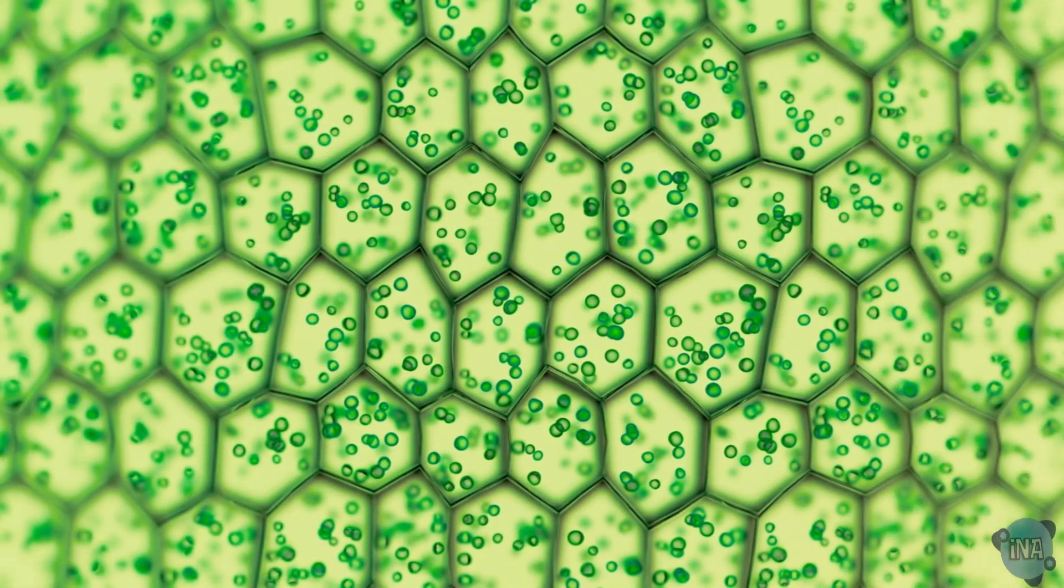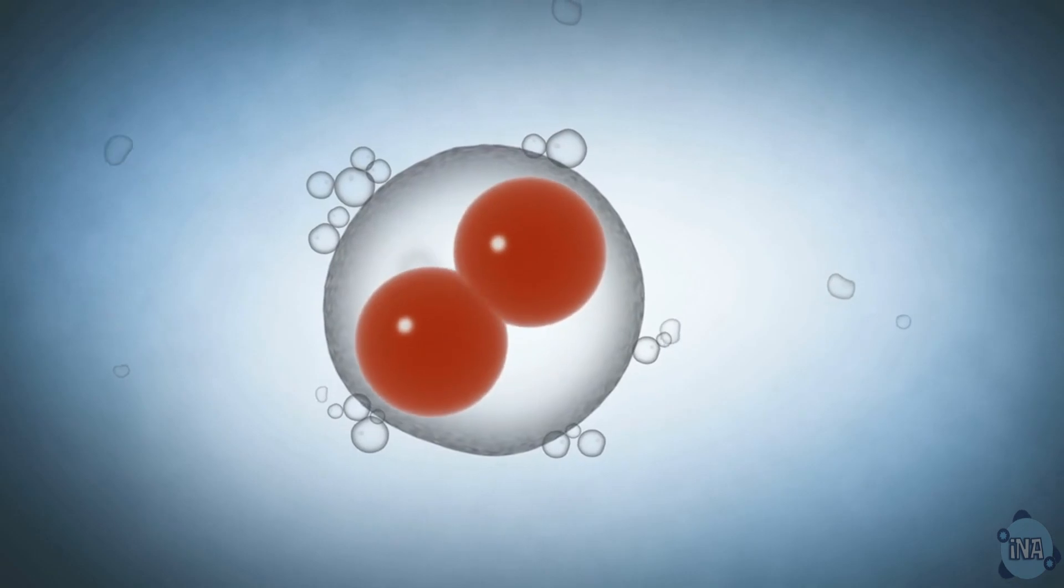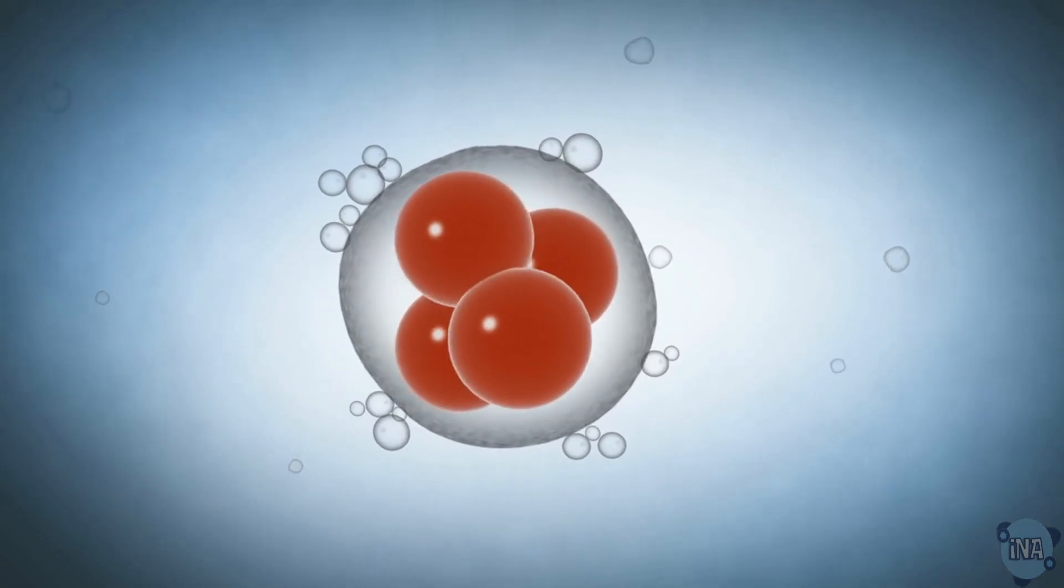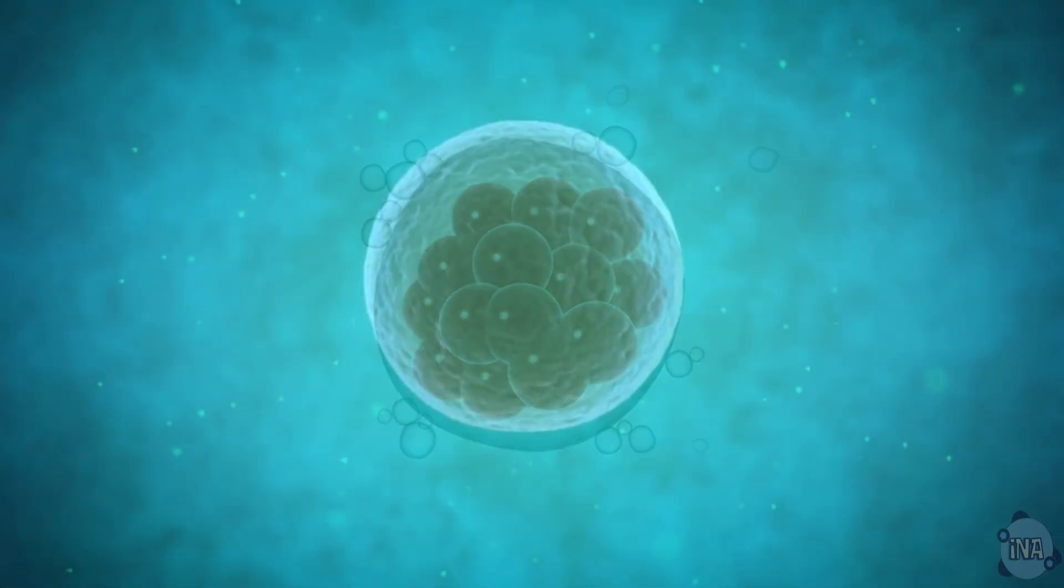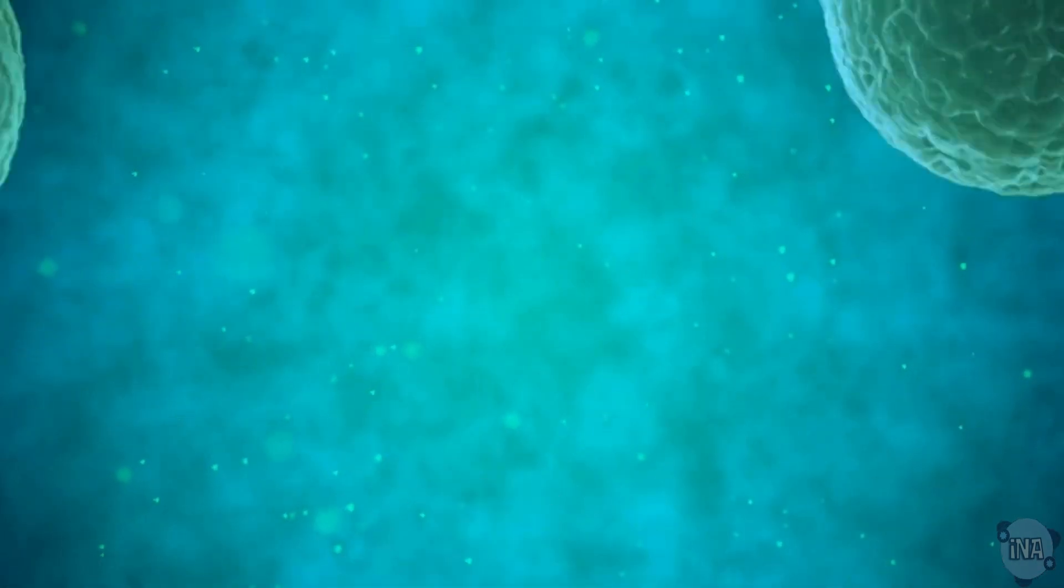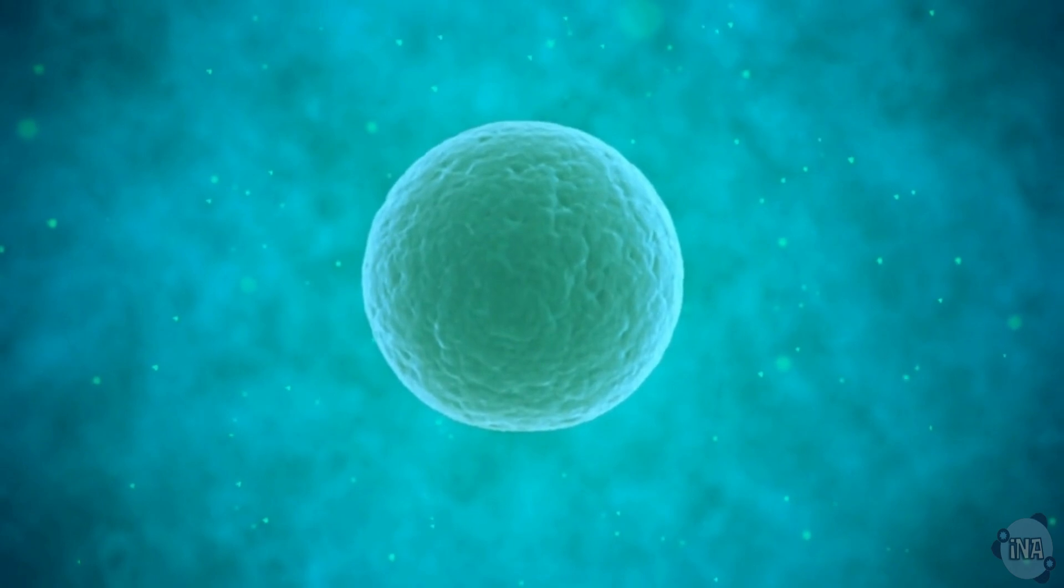Let's start with embryonic stem cells. Imagine a tiny embryo formed from a single fertilized egg. These cells are like magic - they can develop into any cell type in our bodies, from nerve cells to blood cells, shaping our very being.